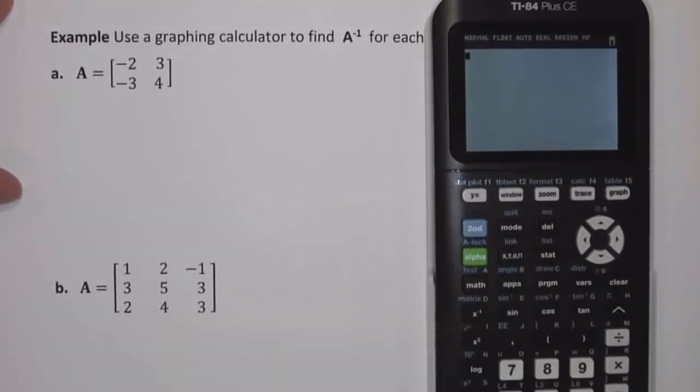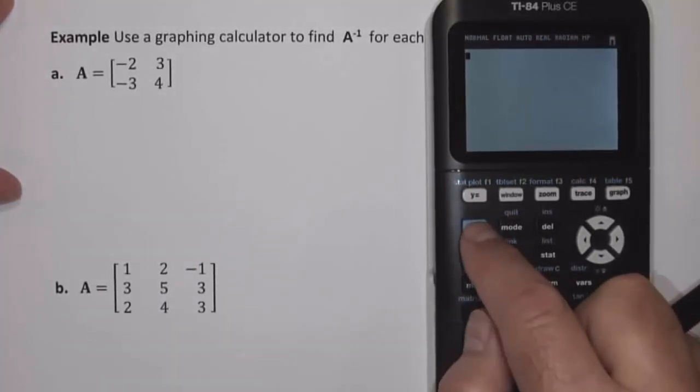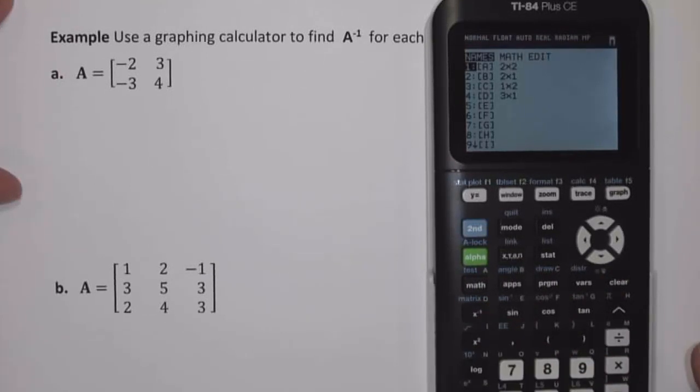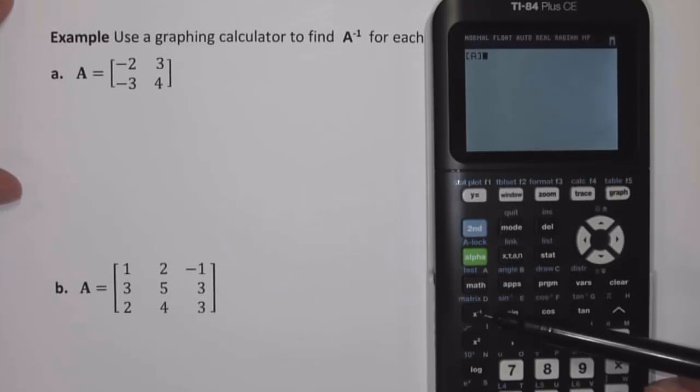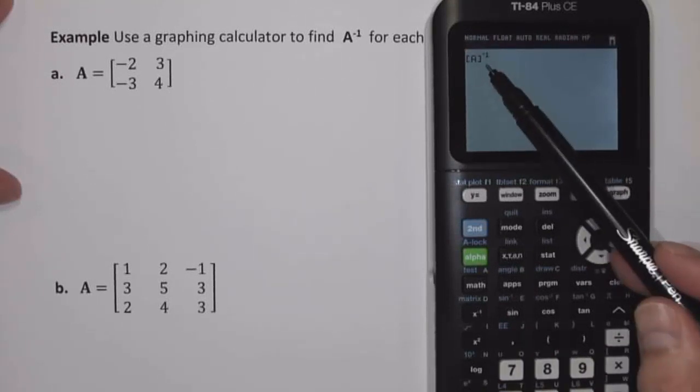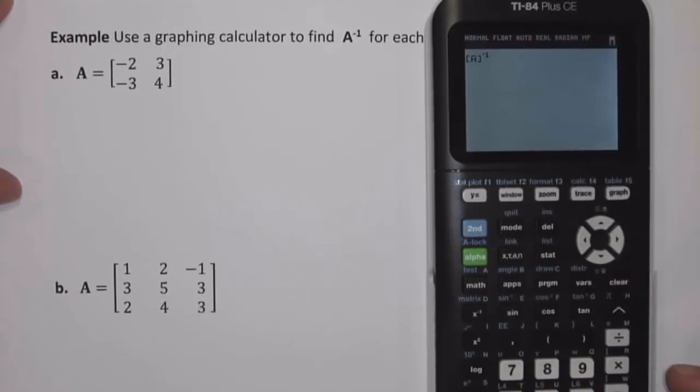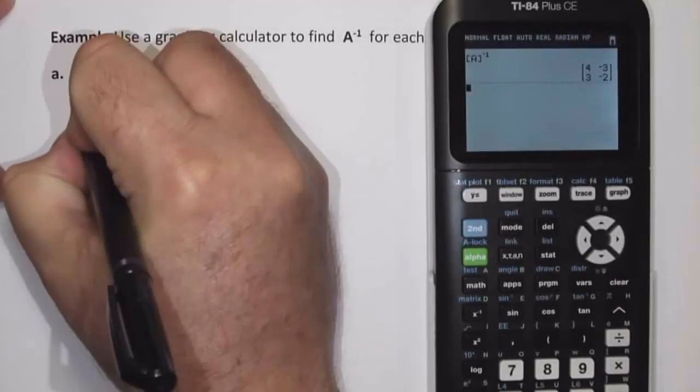2nd quit to get back to the home screen. Now we're going to choose Matrix, and we're going to select Matrix A, and we're going to use this button right here, which is the reciprocal or inverse button. So I'm going to select that. Now this is saying Matrix A inverse. So if I hit Enter, I get the result,